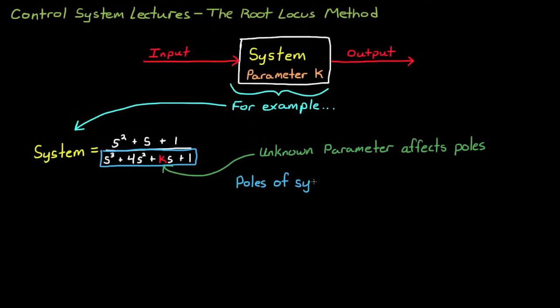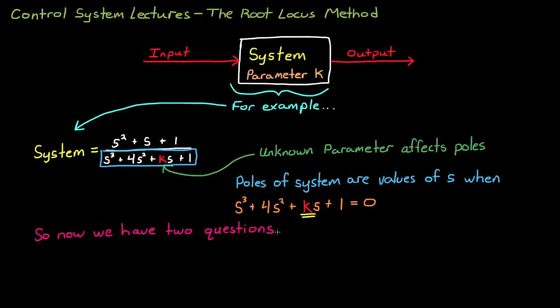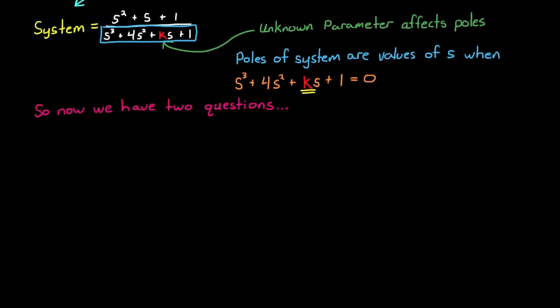Remember that the poles of the system are values of s that cause the transfer function to be divided by 0, or to blow up to infinity. And you can see from this polynomial that the value of k does in fact move the roots of this polynomial. So you have this transfer function, and now at this point you want to know the answer to one of two questions.